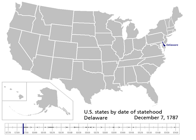The Admission to the Union Clause of the United States Constitution, often called the New States Clause, found at Article 4, Section 3, Clause 1, authorizes Congress to admit new states into the United States beyond the thirteen already in existence at the time the Constitution went into effect.